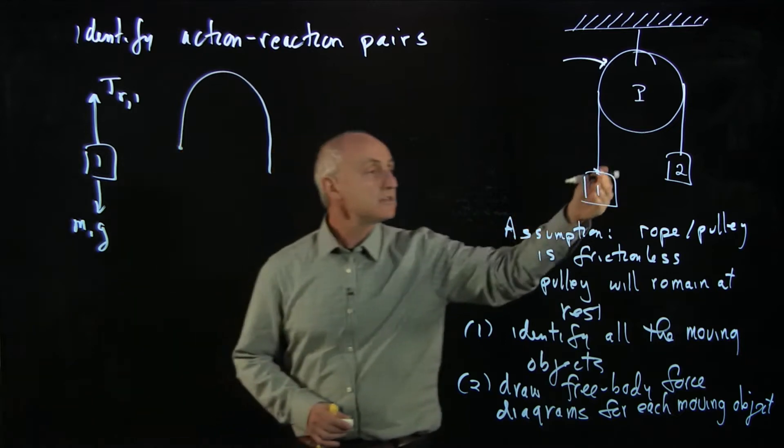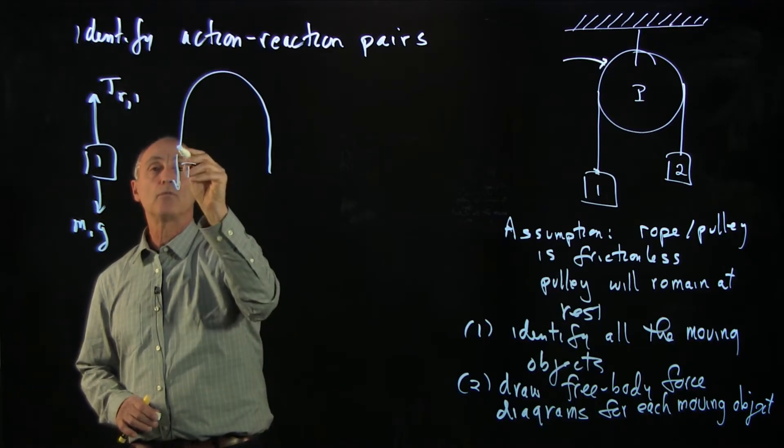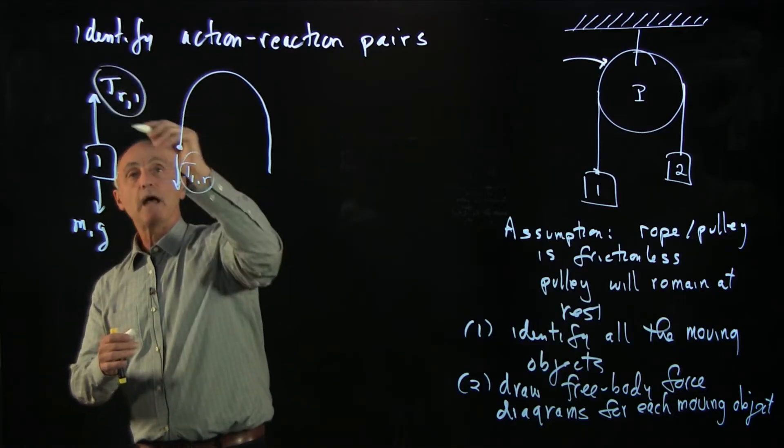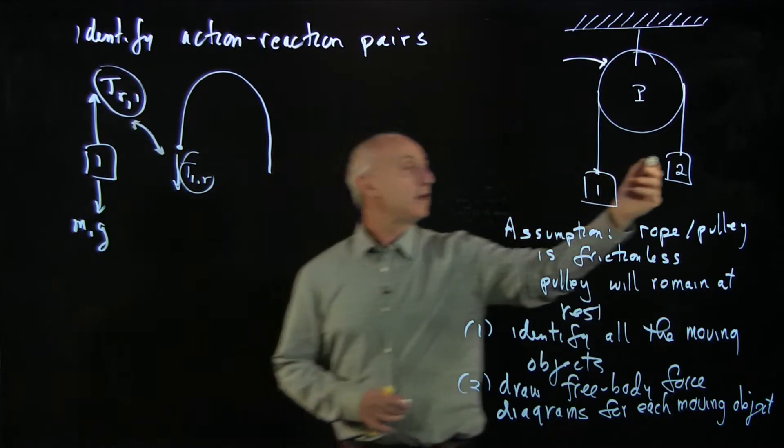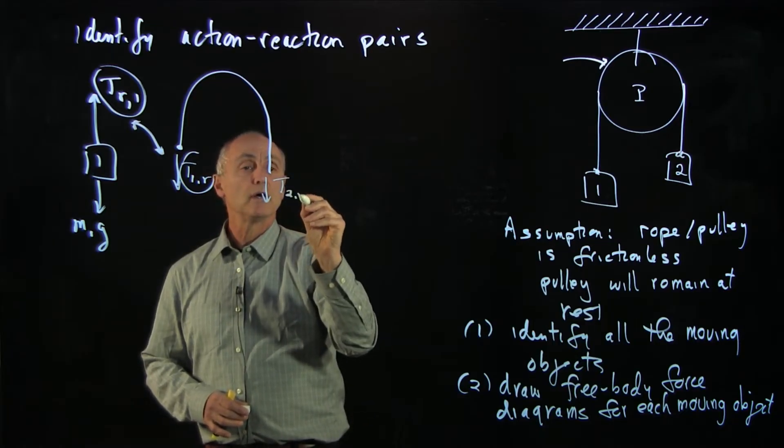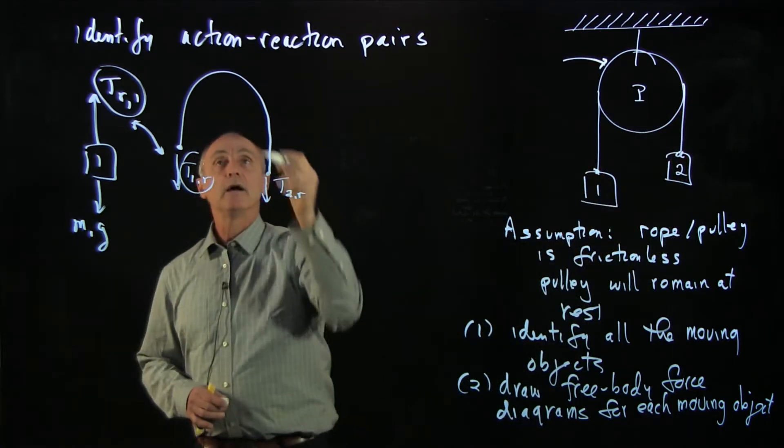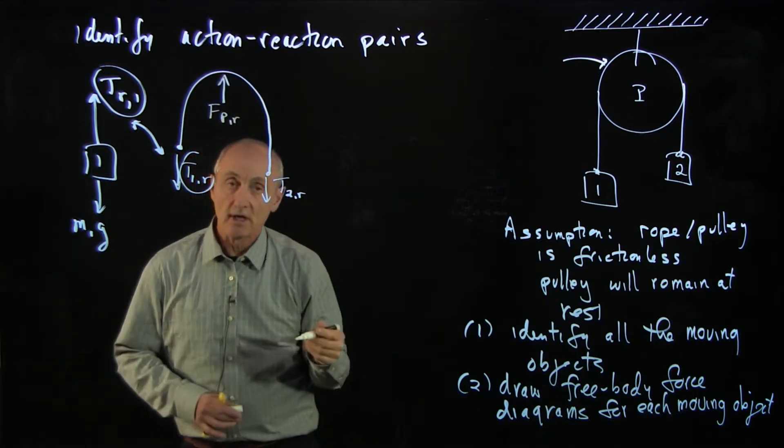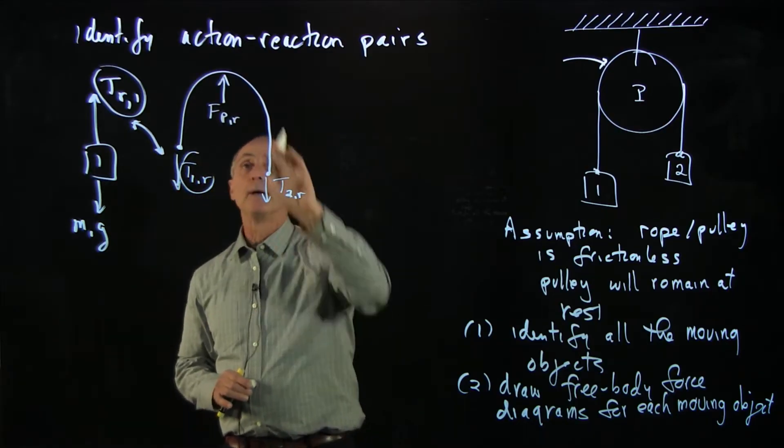This object here is pulling the rope down. So we have on the rope object 1 pulling it down, and this is our action-reaction pair. What are the other forces on the rope? Over here, object 2, T2, is pulling the rope down with the tension at the end of that rope. Also, the pulley is exerting a force on the rope upwards. These are the force diagrams on the rope.